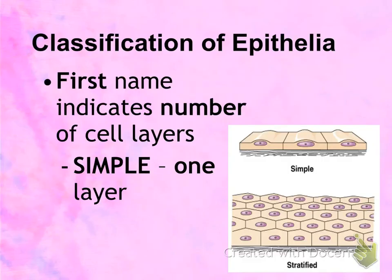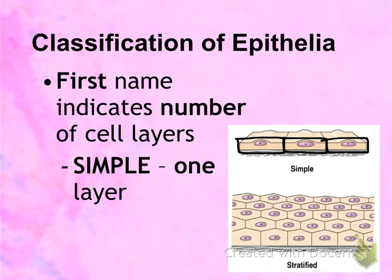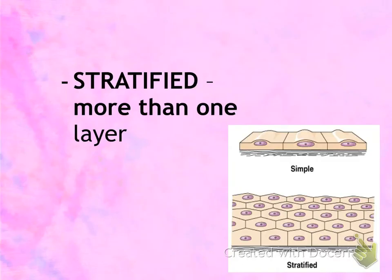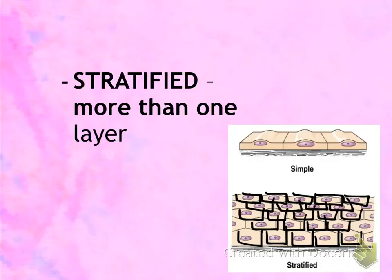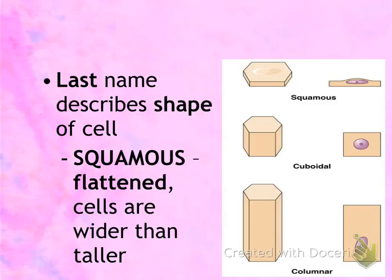There are eight different types of epithelia — epithelia being the plural of epithelium. Each of the eight epithelia has a first name and a last name. The first name indicates the number of layers. 'Simple' means there is only one layer of cells. 'Stratified' means there are more than one layer — for example, five layers stacked on top of each other. As long as there is more than one layer, it is considered stratified.